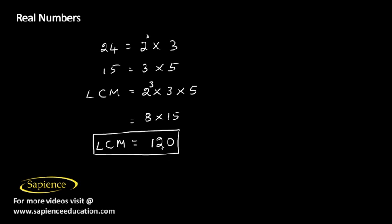So for first kind, the number of boxes will be total number of chocolates divided by number of chocolates in one box. So 120 divided by 24, which will give us 5. So 5 boxes of first kind.